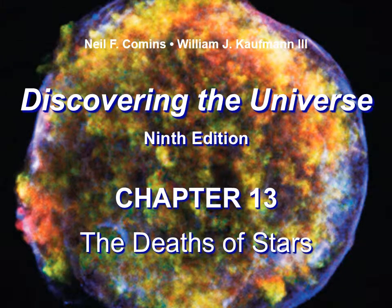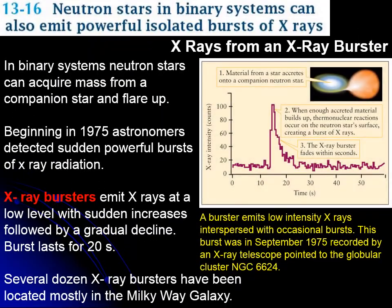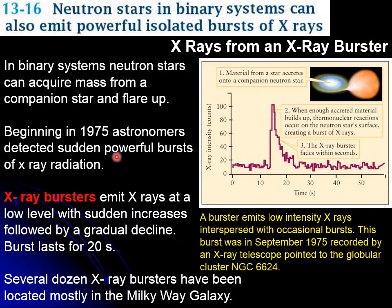This is the recording of sections 16 and 17 of chapter 13, continuing with neutron stars. Neutron stars can also produce bursts of x-rays, and the mechanism is something we have seen in the past with white dwarfs. If you have a neutron star in a binary system, it can acquire mass from the companion, and this mass, as it is attracted by the gravity of the neutron star, will speed up and produce x-rays as it reaches the neutron star.